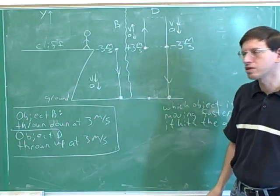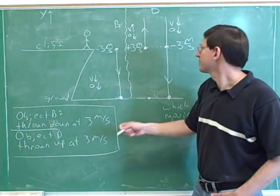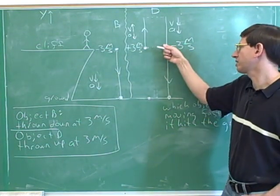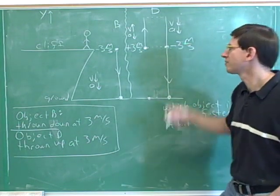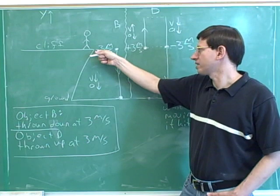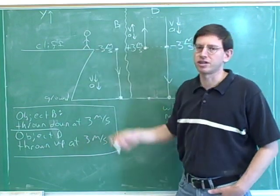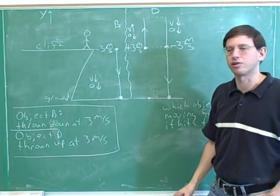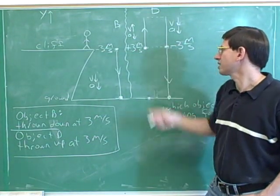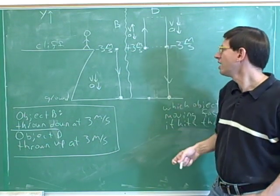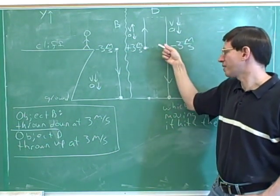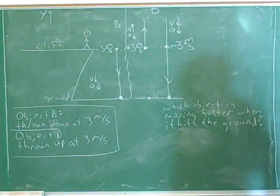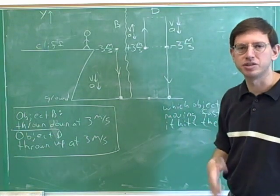Since they're both at the same speed when they're at the height of the cliff, they should also be at the same speed when they hit the ground. Object D on its downward path, when it is at the height of the cliff, its velocity is negative three meters per second. Object B also had a velocity of negative three meters per second at the height of the cliff. So since they're both at the same velocity at the height of the cliff, they should both be at the same velocity when they hit the ground. I hope you can see how we can use symmetry here to solve this problem without having to use any equations.